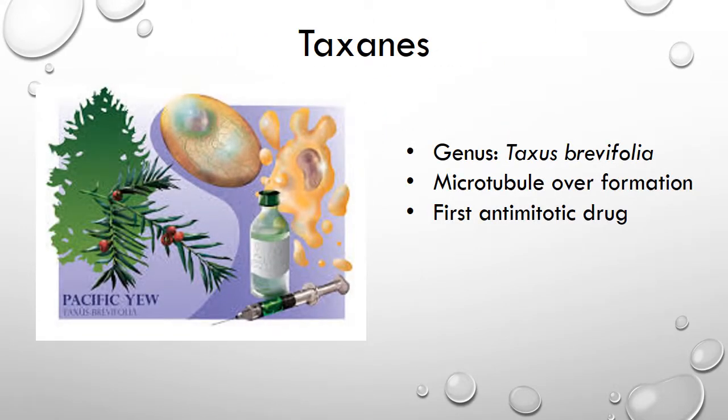Taxanes were the first microtubule-inhibiting drug. They were isolated in the 1970s from the bark of the Pacific yew tree. Taxanes work by encouraging the formation of microtubules, but then stop them from being disassembled during mitosis. This causes the cells to become extremely clogged with microtubules, so they cannot grow or divide. Then cell death by apoptosis must occur.